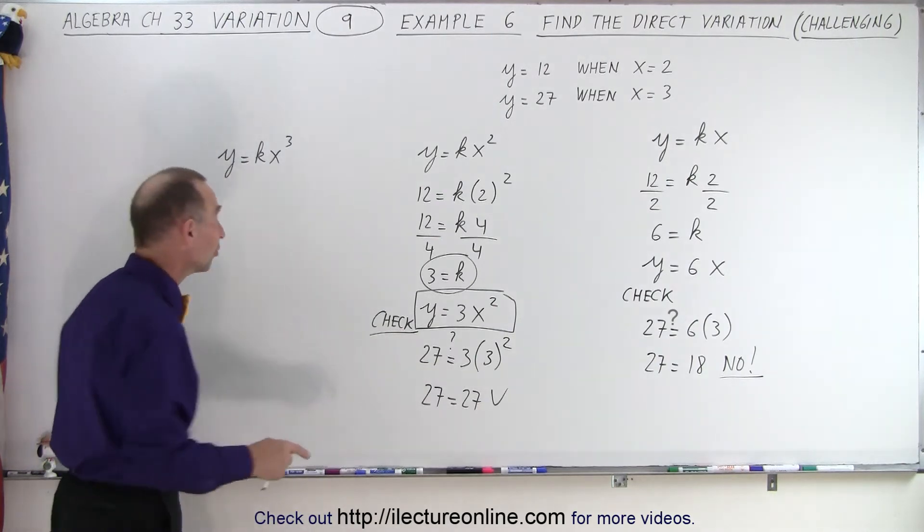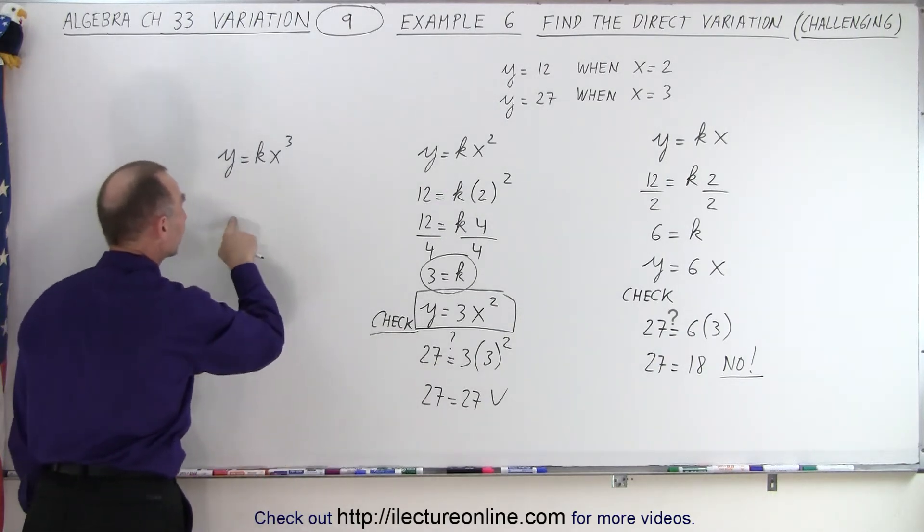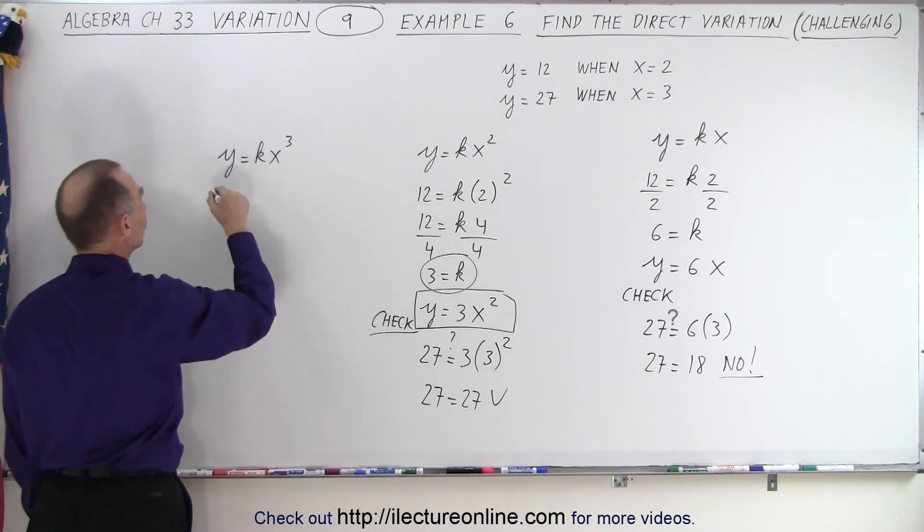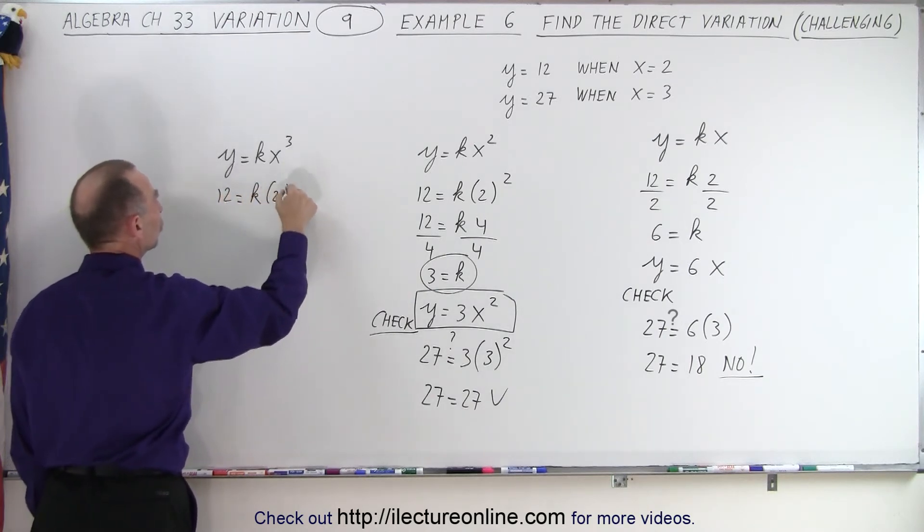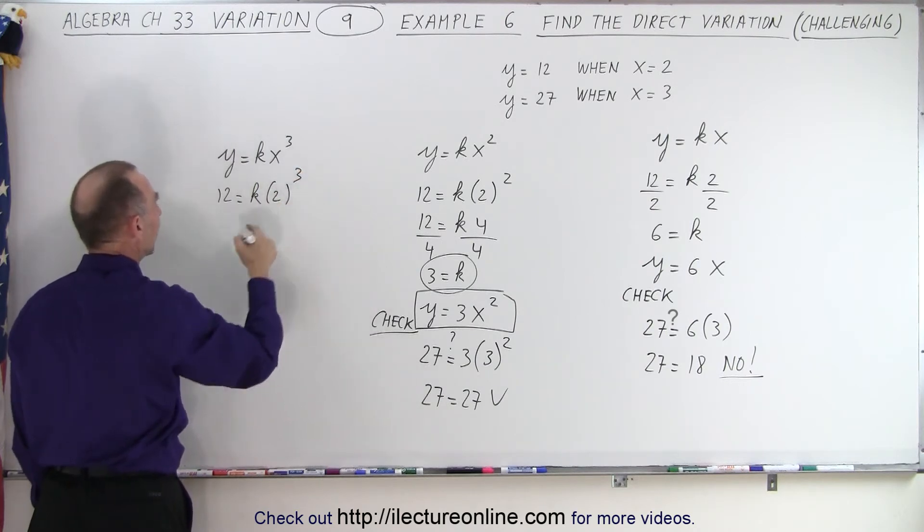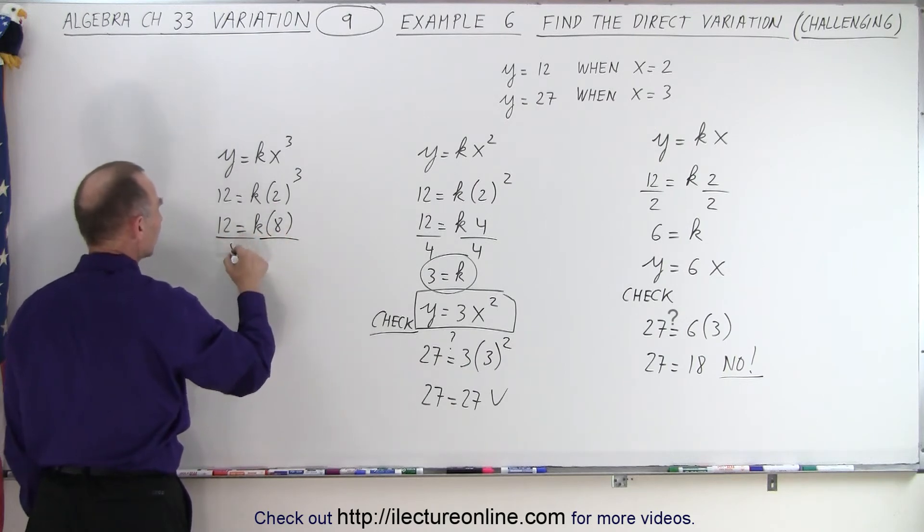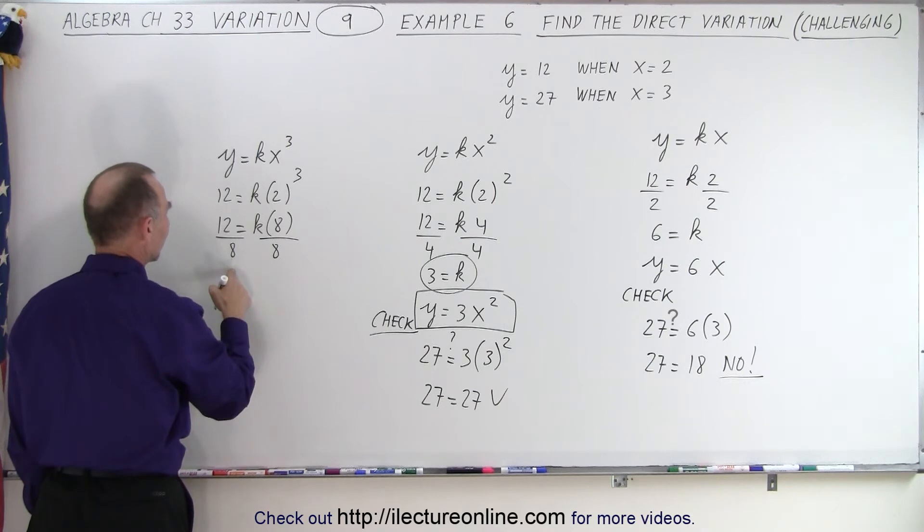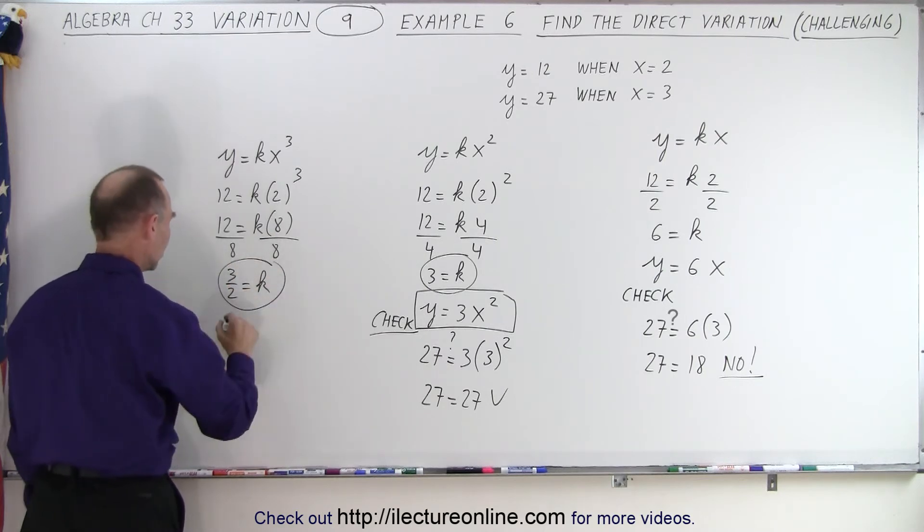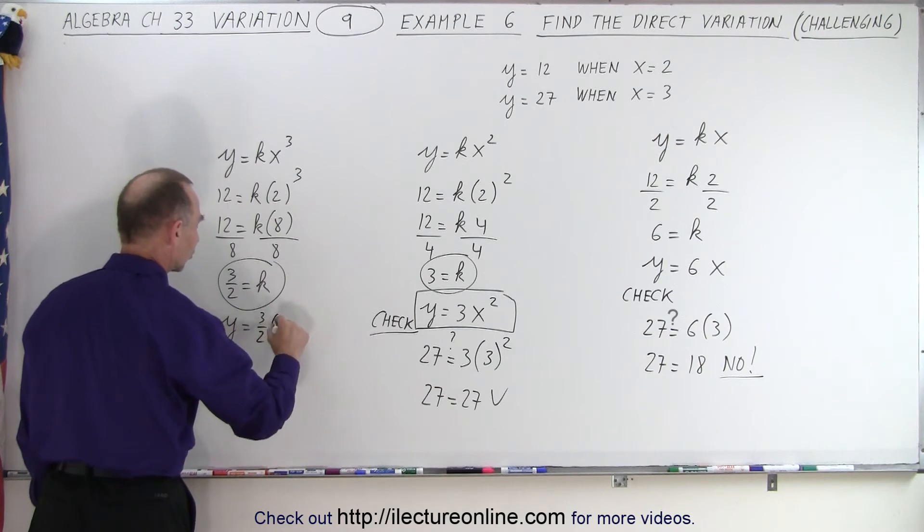Well, just to see what would happen, let's try this equation right here. So again, we plug in 12 and 2, so we have 12 is equal to k times 2 cubed. 2 cubed is 8, so 12 equals k times 8. Divide both sides by 8, and so we have 12 divided by 8, which is 3 over 2, so 3 over 2 equals k. So now we found our k for that equation. We have y equals 3 over 2 times x cubed.